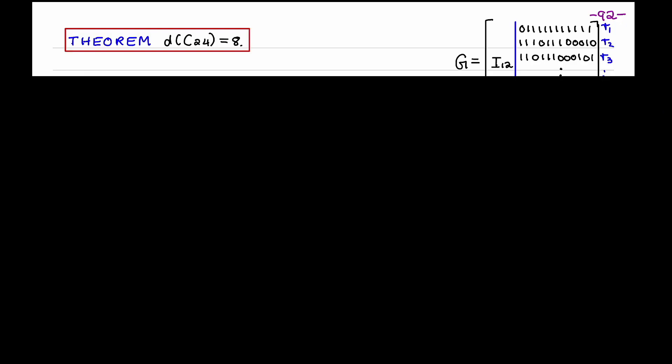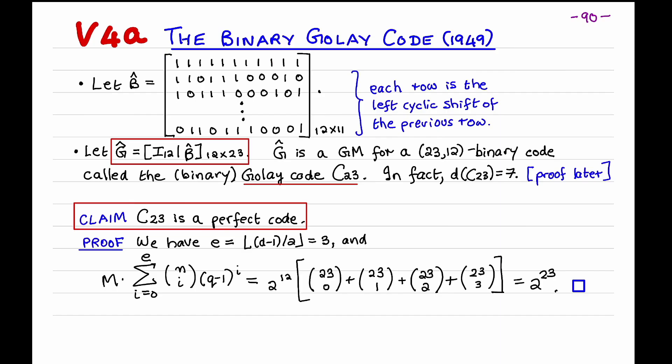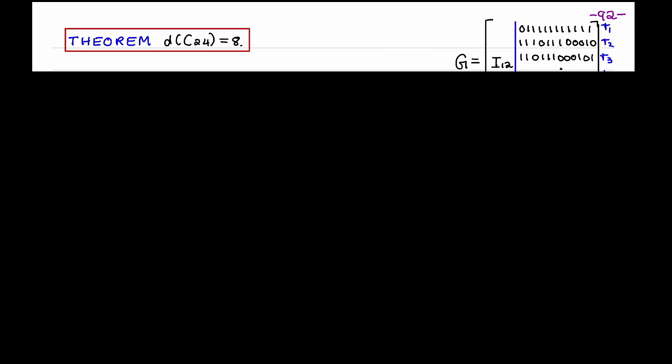I'll now prove that C24 has distance 8. And then follows immediately that C23 has distance 7. This is because we obtain C24 by adding a single bit to every codeword in C23. So if C24 has distance 8, that means that C23 must have distance 7 or 8. But C23 has at least one codeword of weight 7, namely the second row of G-hat, because the second row of B-hat has weight 6. And so, since C23 has codewords of weight 7, its distance can't be 8. And so, C23 has distance 7.